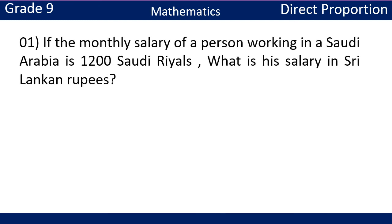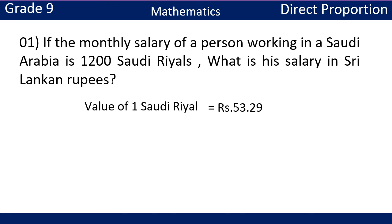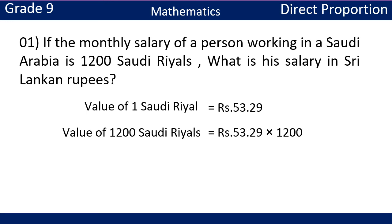First example: if the monthly salary of a person working in Saudi Arabia is 1,200 Saudi Riyals, what is his salary in Sri Lankan rupees? The value of 1 Saudi Riyal equals 53 rupees 29 cents. So the value of 1,200 Saudi Riyals equals 53 rupees 29 cents multiplied by 1,200, which equals 63,948 rupees.